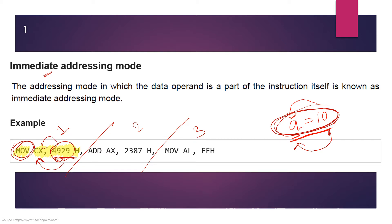There are many commands like ADD, MOV and others. The key meaning of immediate addressing mode is that the data operand, whatever data you have, is a part of the instruction itself. In 8086 programming, we write the command, then the name of the register, and then the data directly in the instruction.